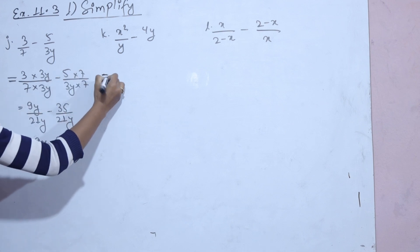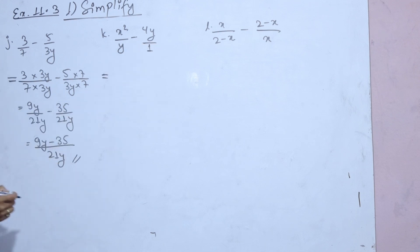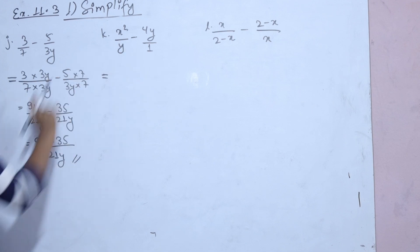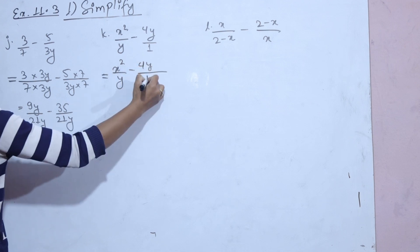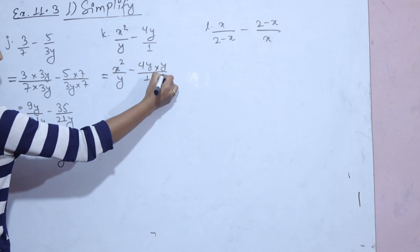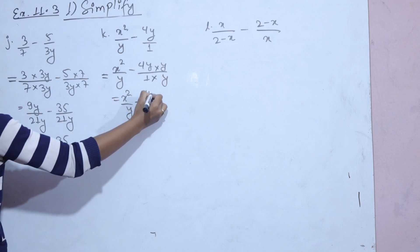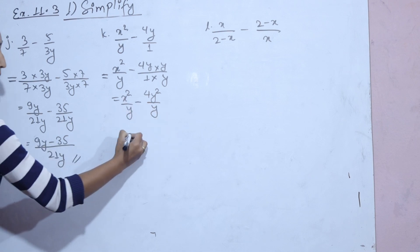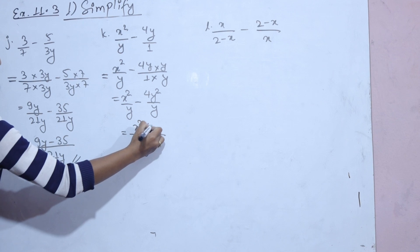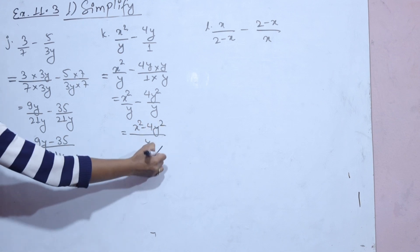Next sub-question: check the denominator — 1 into y equals y. So we have x squared by y minus 4y squared by y. The denominator is the same — y. The result is x squared minus 4y squared.